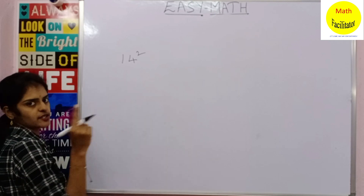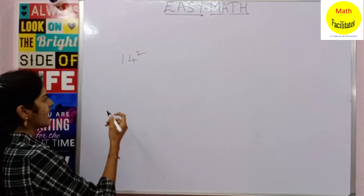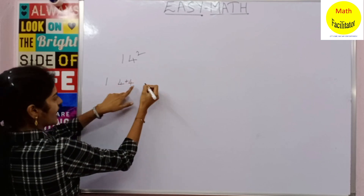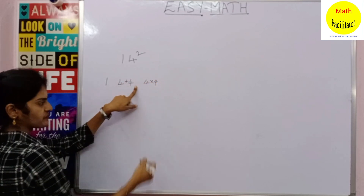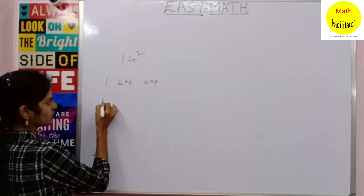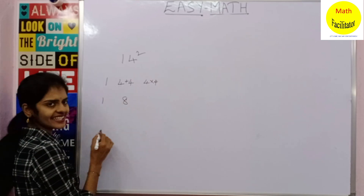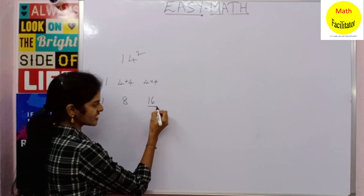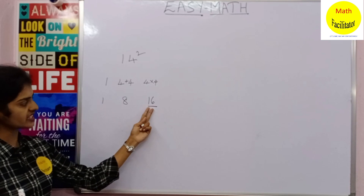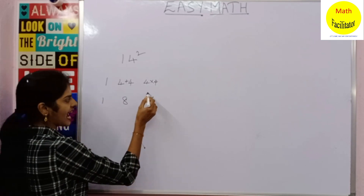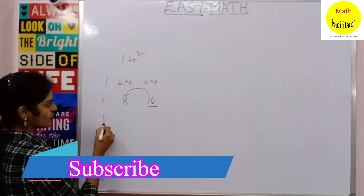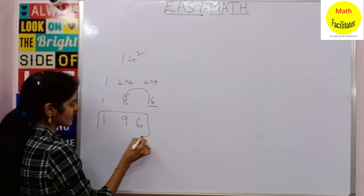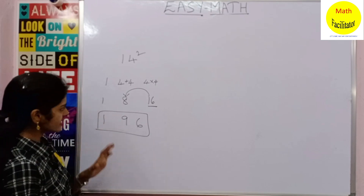Now let us take 14². You write 1 first, then add: 4 + 4 = 8, then multiply: 4 × 4 = 16. But in the units place you cannot accommodate two digits, so you add the carry of 1 to the next digit: 8 + 1 = 9, giving 196. So 14² = 196.